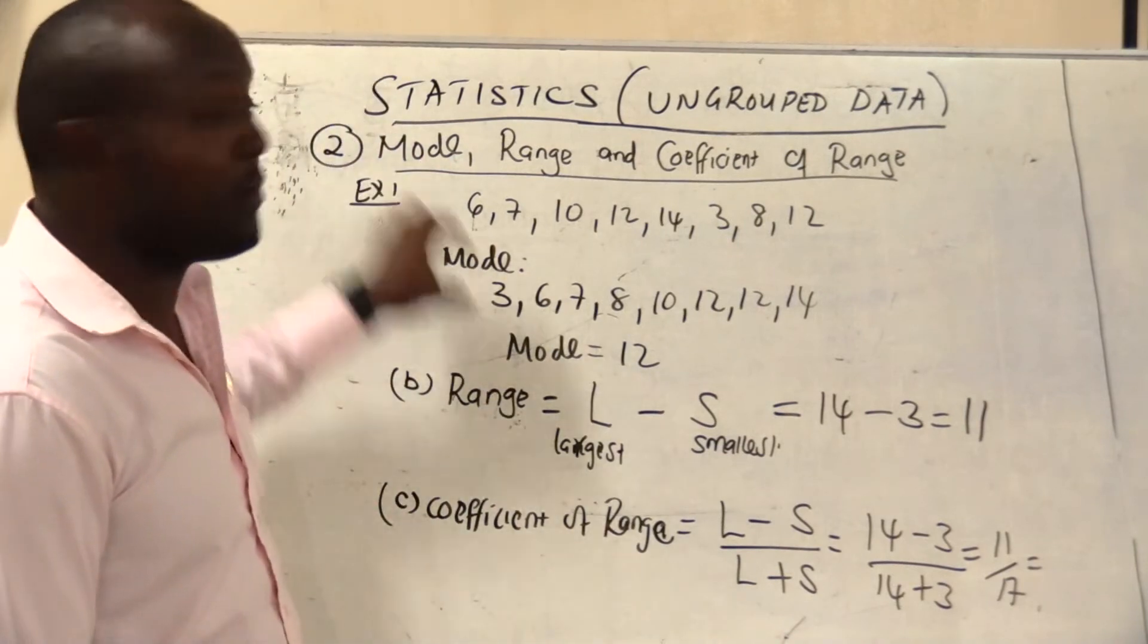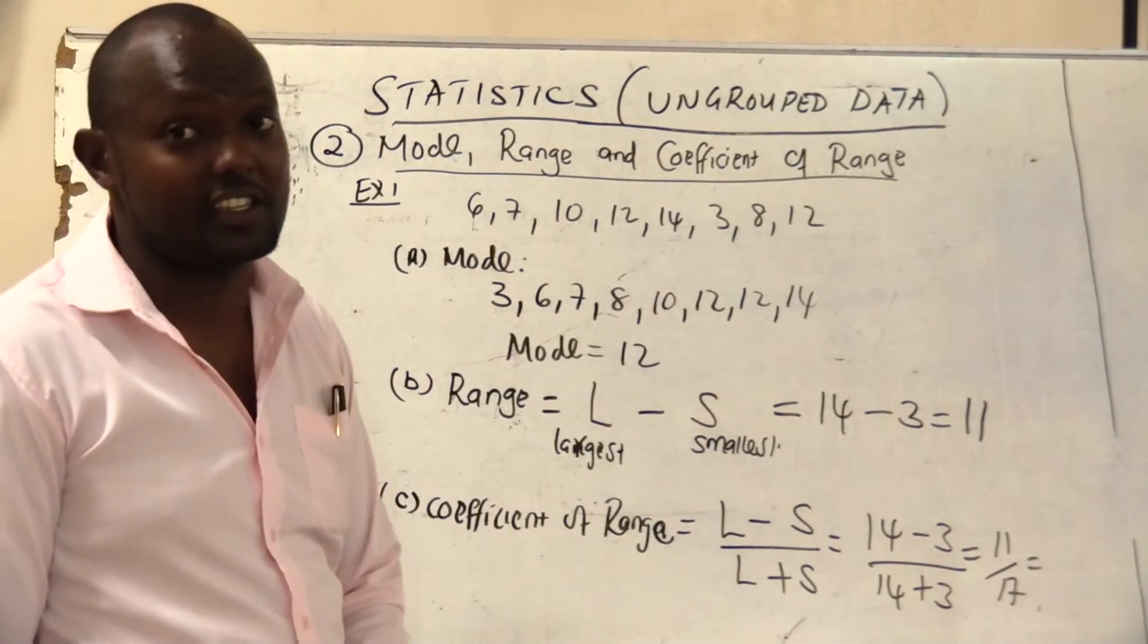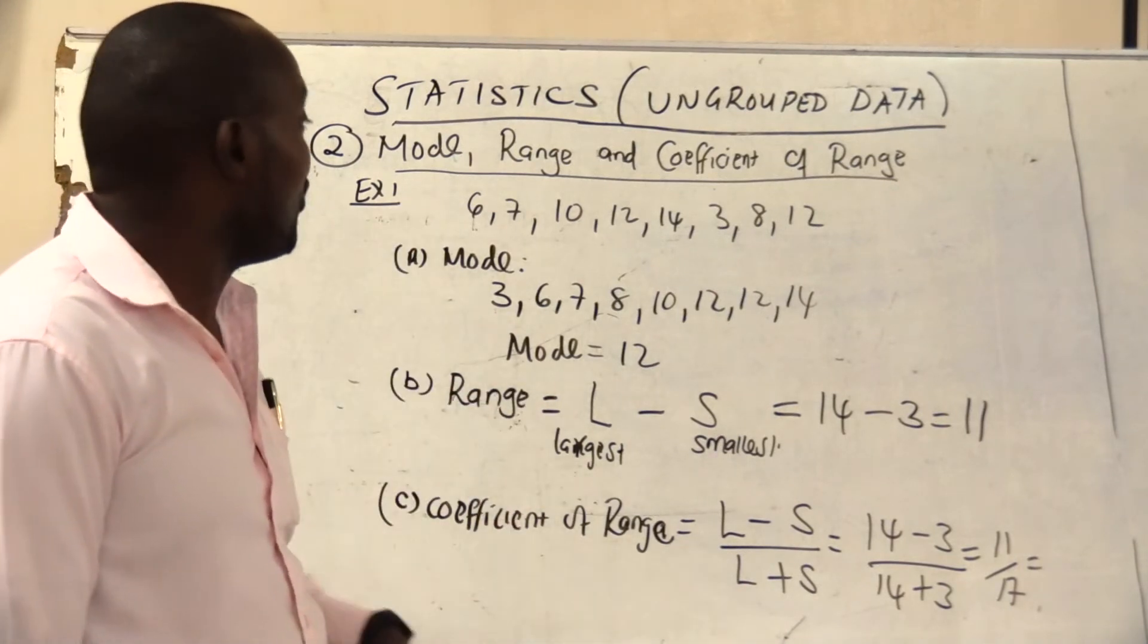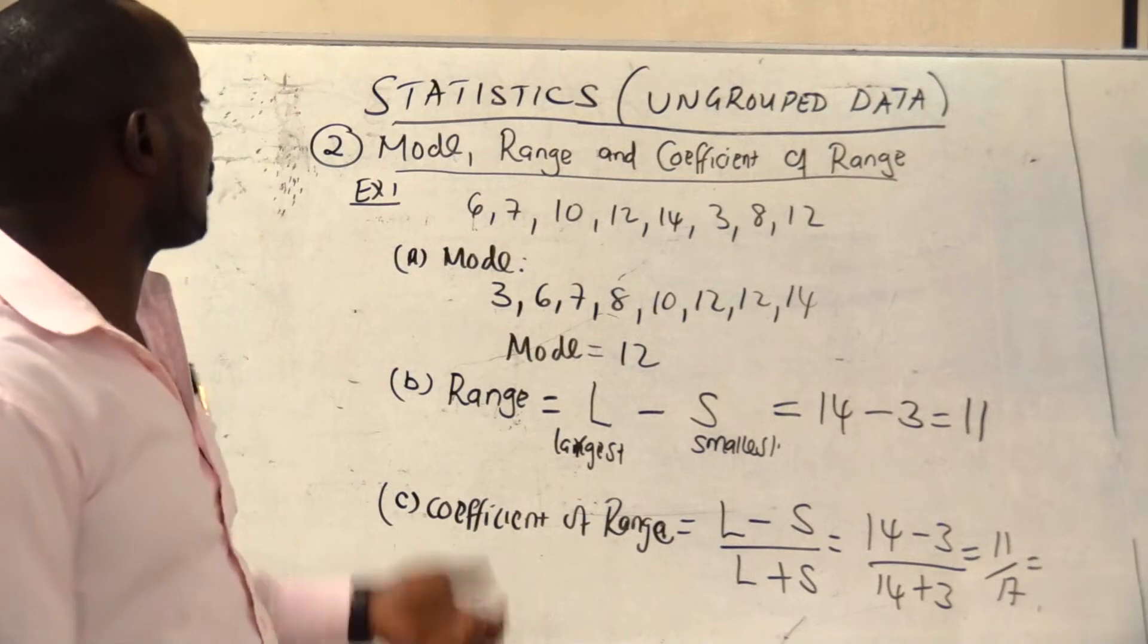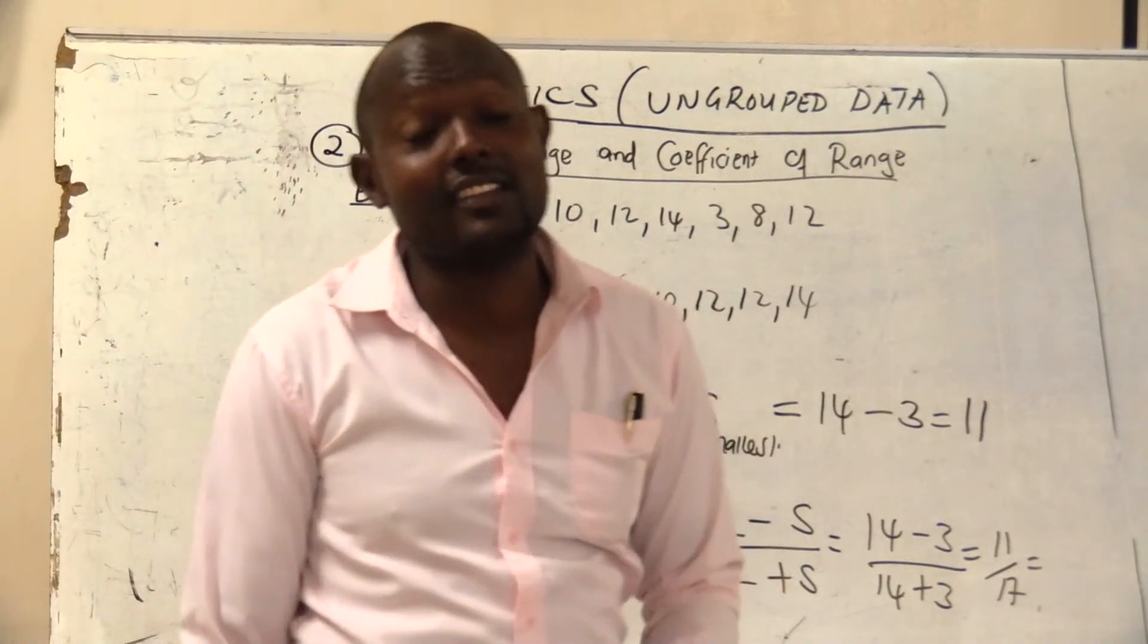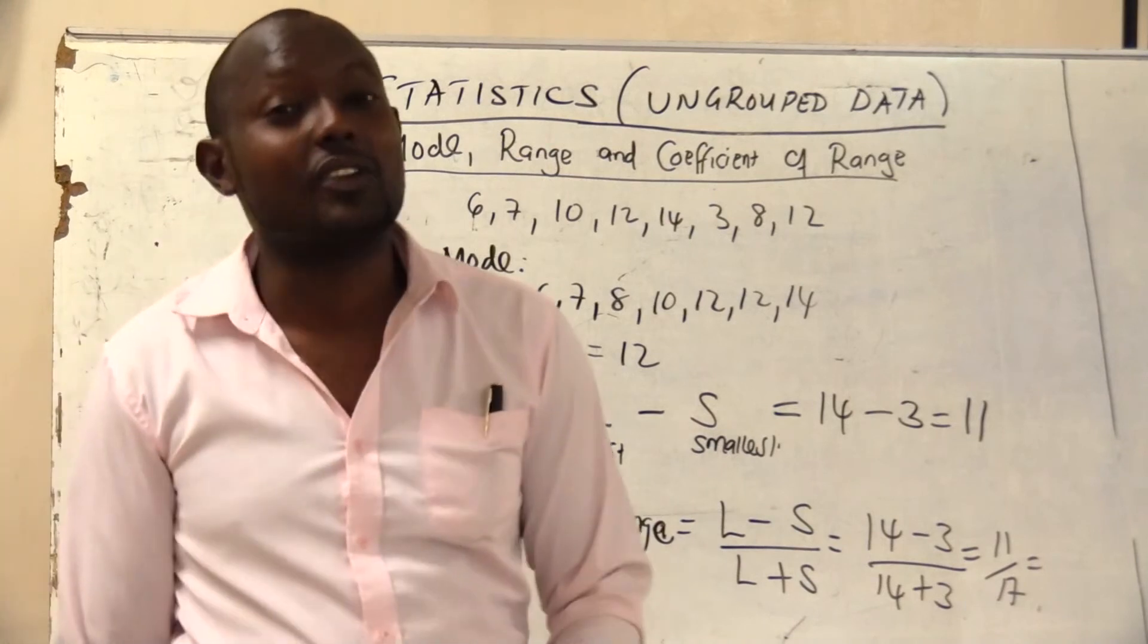So that's how we calculate the mode, range, and the coefficient of range. With that one it's simple and we can be able to proceed now to what we call how do we calculate median, how do we calculate percentile, how do we calculate quartile.